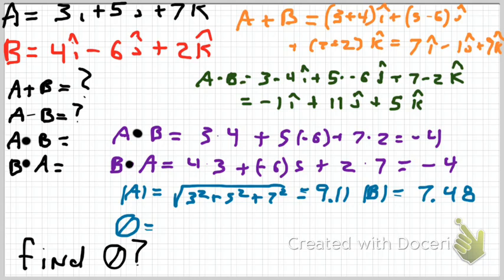Now, considering that a dot b equals the magnitude of a times the magnitude of b times cosine theta, we can solve for the angle between them. That is cosine theta equals a dot b, divided by the magnitude of a times the magnitude of b. And when we do that all together, we take the inverse cosine of that, we get 93.36 degrees.